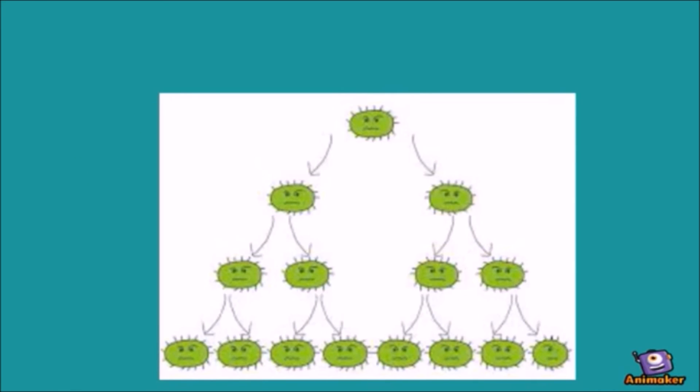The last one is asexual reproduction. Most unicellular organisms divide through mitosis. The cell divides into two identical clones of itself through mitosis, and that is how they reproduce.